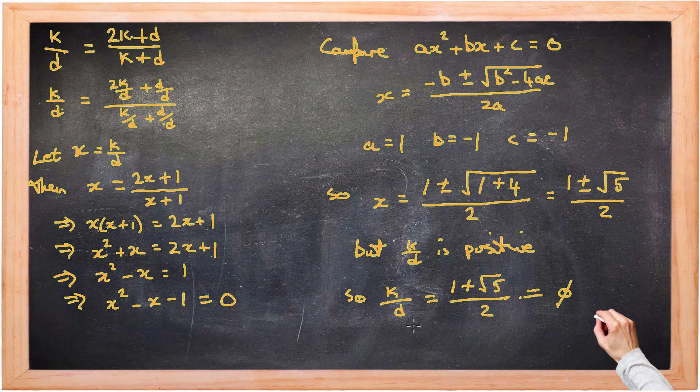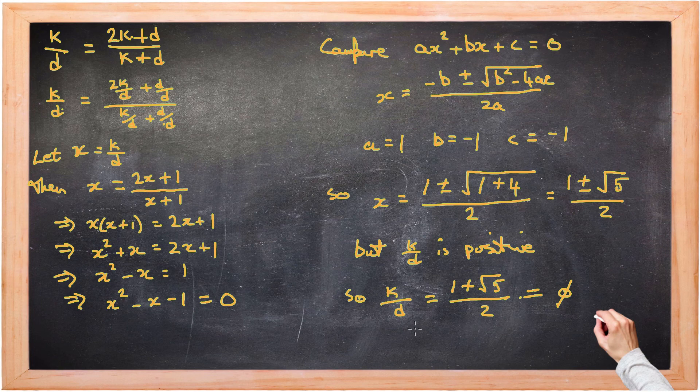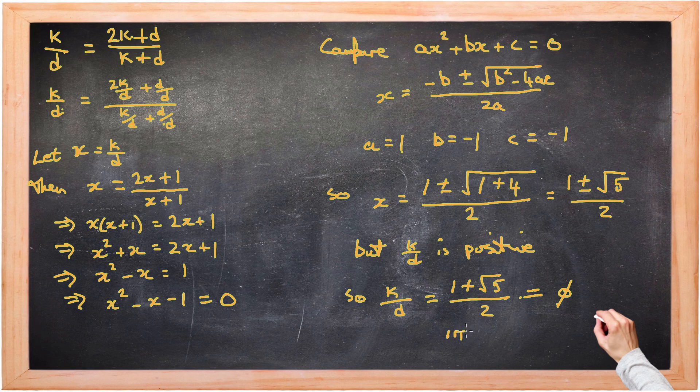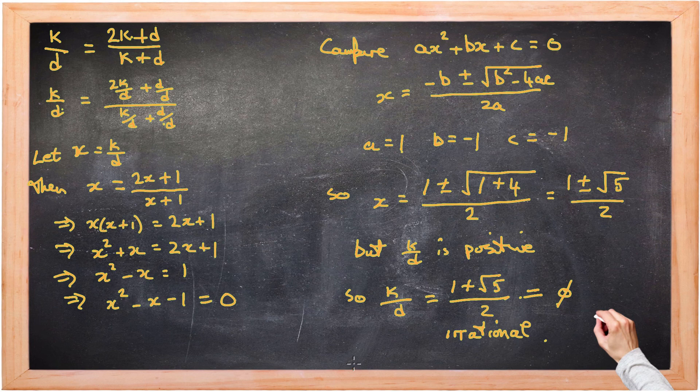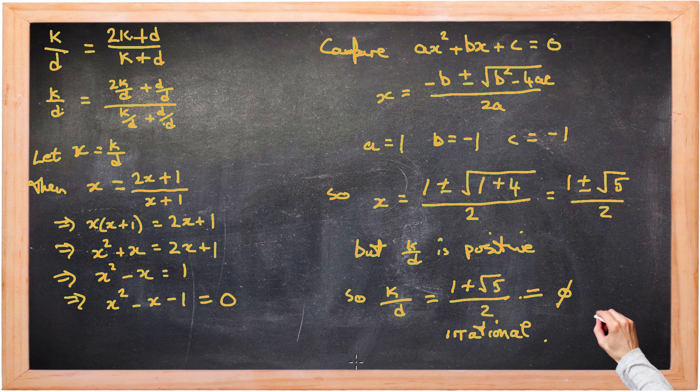And remember, that worked for any infinite Penrose tiling. And this number is irrational. It cannot be written as the ratio of an integer divided by another integer. Now suppose we could have an infinite Penrose tiling using these tiles that was periodic. It would have a patch that repeats. And necessarily in that patch.